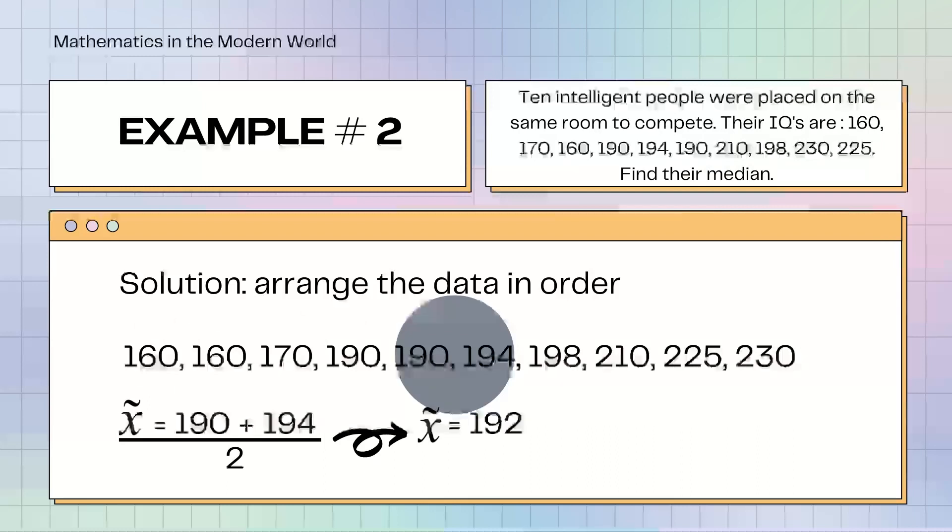Example number 2. 10 intelligent people were placed on the same room to compete. Their IQs are 160, 170, 160, 190, 194, 190, 210, 198, 230, 225. Find their median. We will arrange the data in order from least to greatest. Paano kapag dalawa yung median? If there is 2 median, we will plus them both, then divide it by 2. 190 plus 194 divided by 2 equals 192. The median of example number 2 is 192.